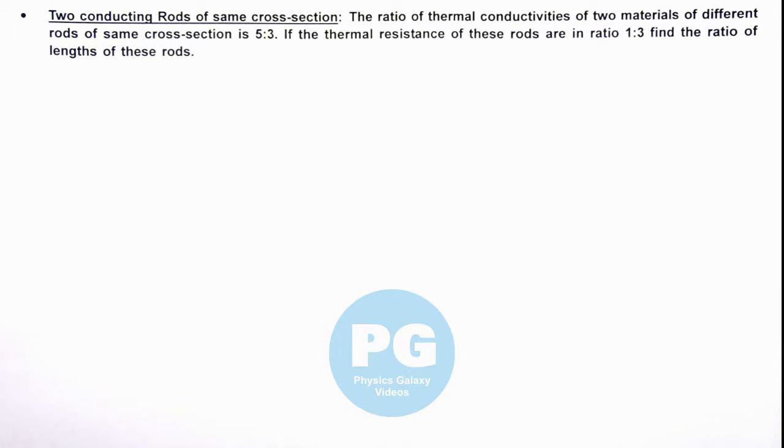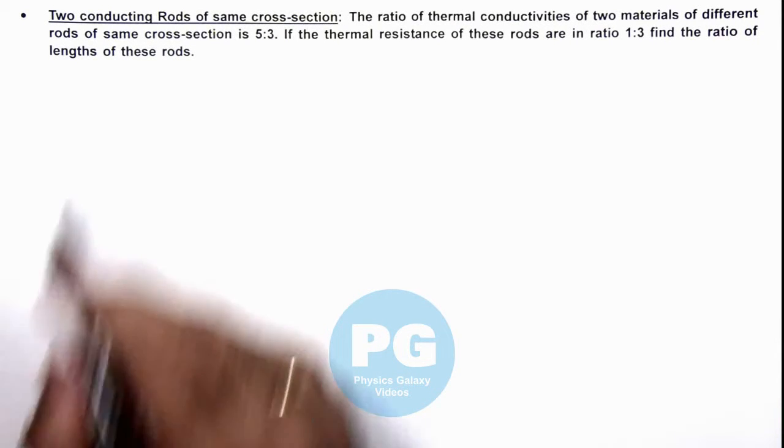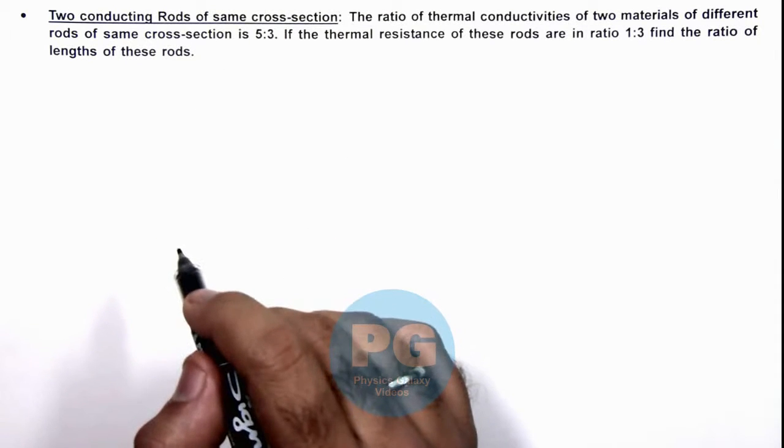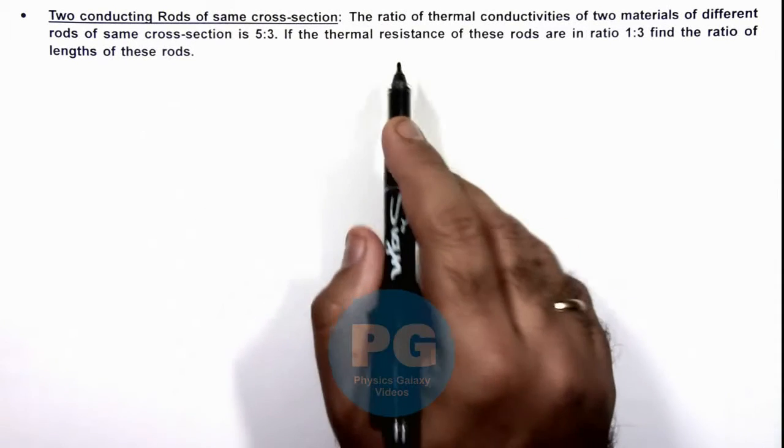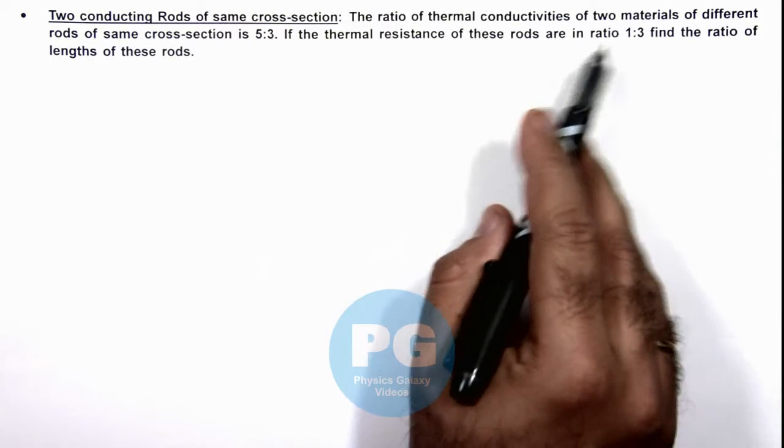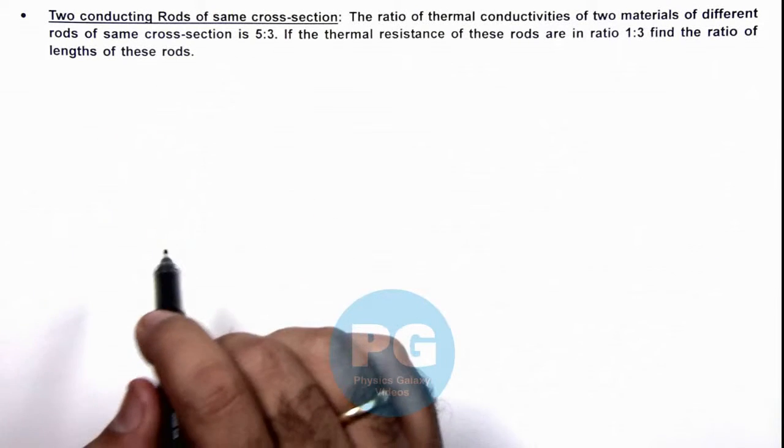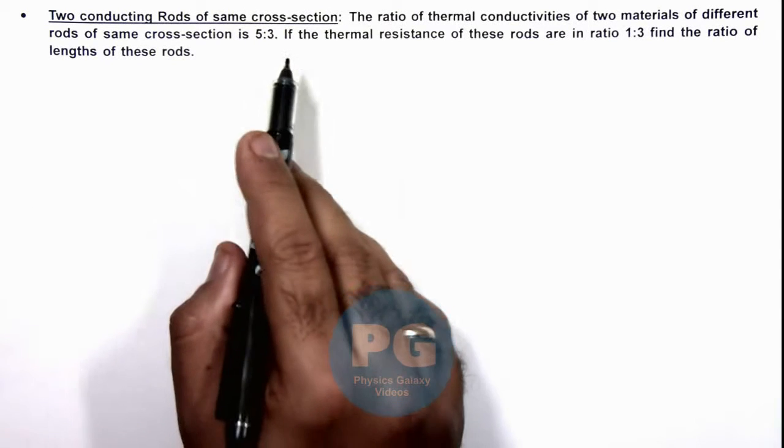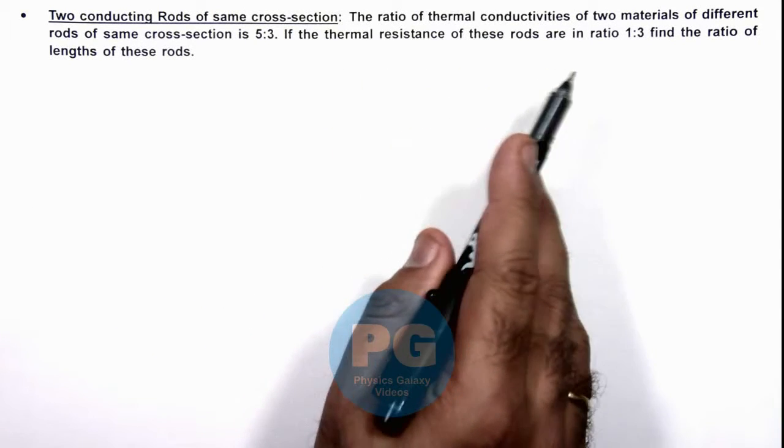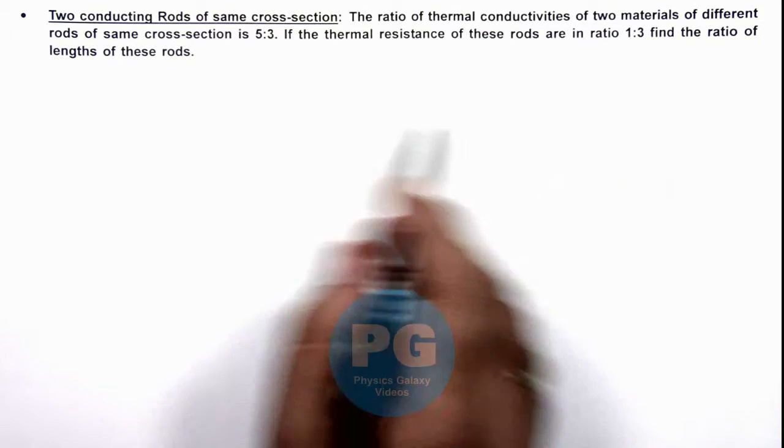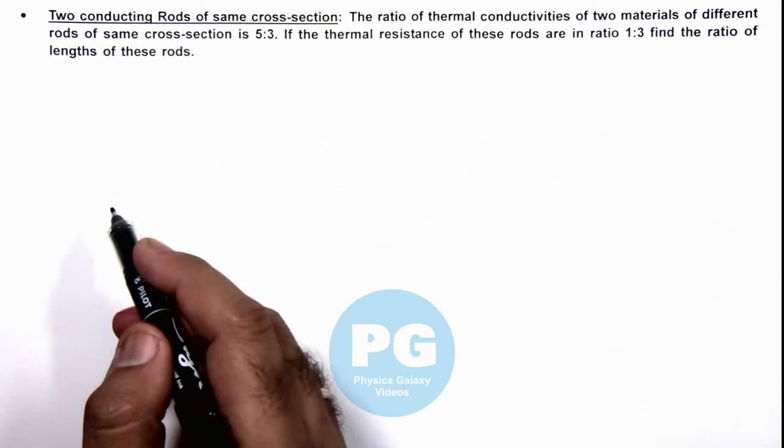In this illustration, we'll be discussing two conducting rods of same cross-section. We are given that the ratio of thermal conductivities of two materials of different rods of same cross-section is 5:3. If the thermal resistance of these rods are in ratio 1:3, we are required to find the ratio of the lengths of these rods.